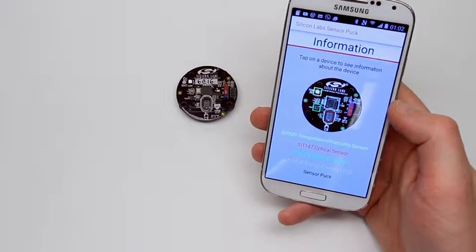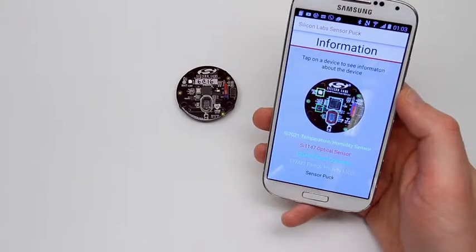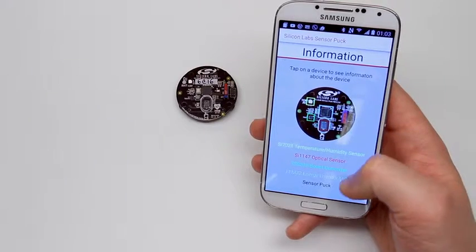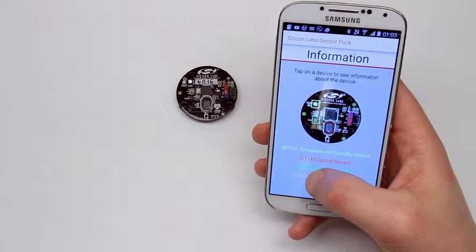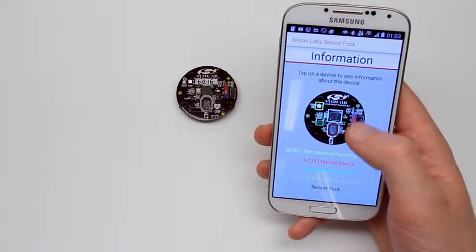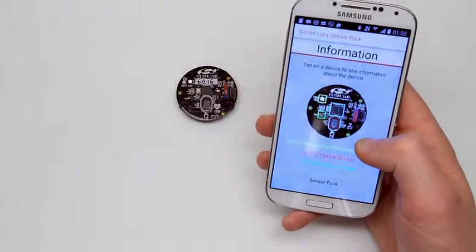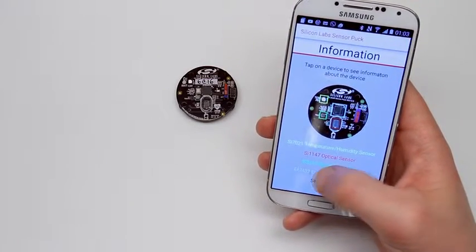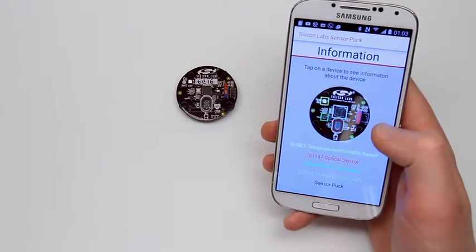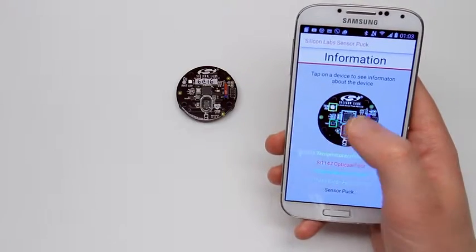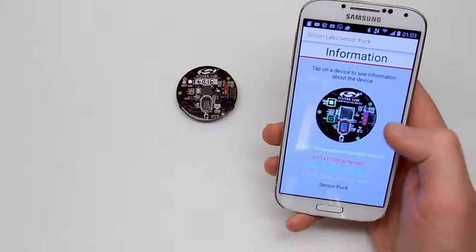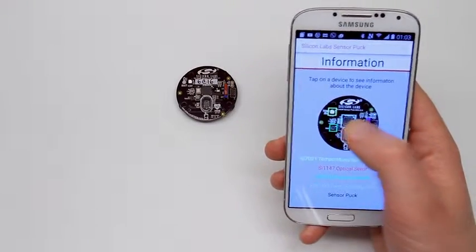Wow, this is amazing. Oh, well, here we have it. So this is a very nice diagram explaining what is what on sensor pack. So yeah, SI-1147 optical sensor apparently is the sensor which can measure UV index. TS-3310, as I was kind of guessing, is boost converter. SI-7021 is temperature and humidity sensor. And EFM32 energy-friendly MCU. What about backside? There is nothing about backside.